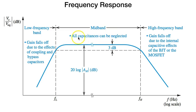At midband, all capacitors can be neglected. If you wish to calculate AM in dB, then it is 20 log mod of AM. At high frequency beyond FH, the gain falls off due to the internal capacitive effects of the BJT or the MOSFETs. We will be discussing these capacitances further.